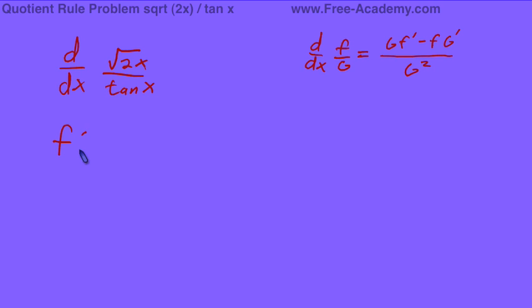By convention, our f of x is the top, so that's square root of 2x. And our g of x is on the bottom, that's tangent of x.